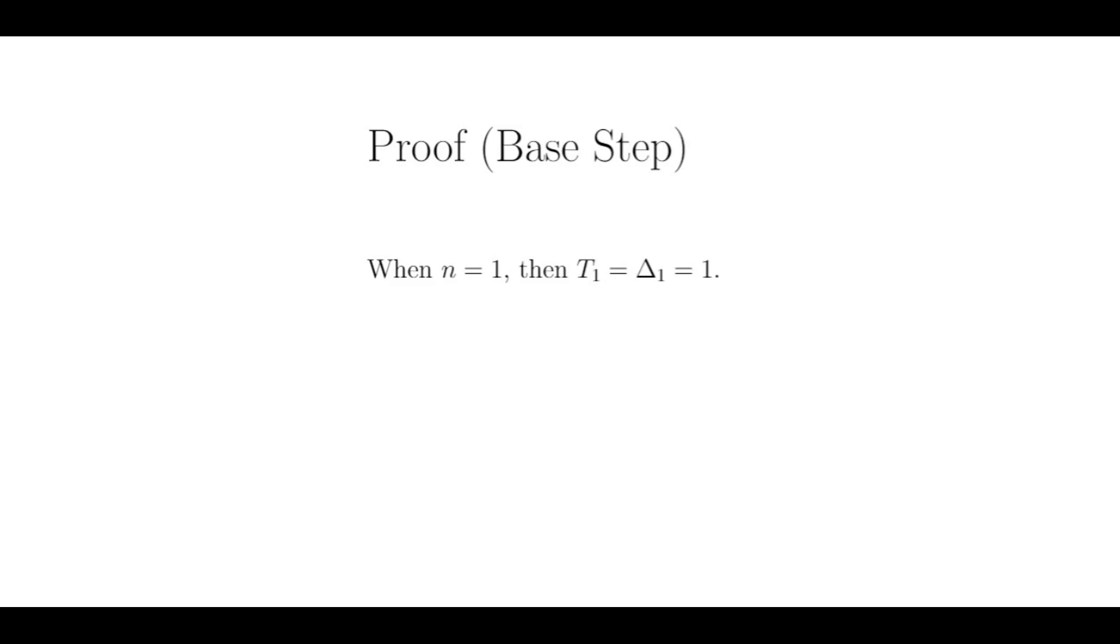The first part is relatively easy. I just plug in 1 for n, and I get 1 times 2 times 3, which is 6, all divided by 6, which is 1, and this is true. t sub 1 is equal to 1, which is the first tetrahedral number, so basically, it represents the top of the pyramid.